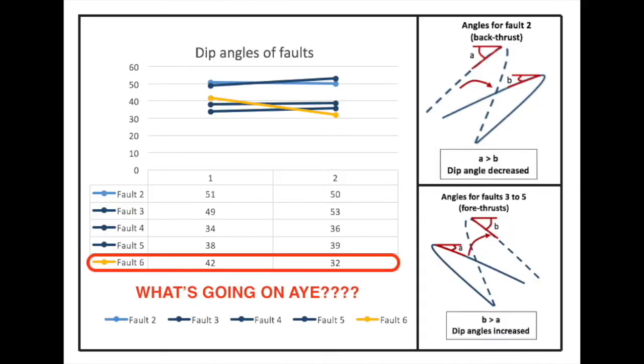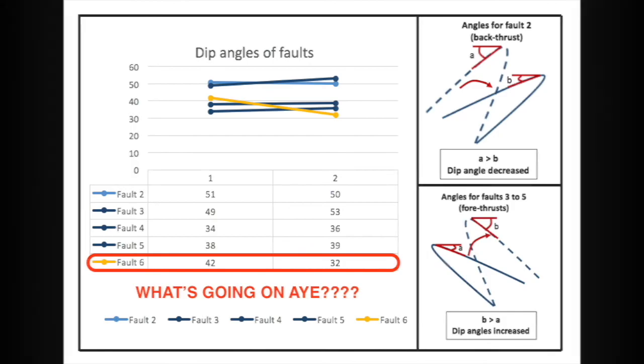Fault 6 does not follow the same trend. Instead, its angle becomes smaller unlike the previous forethrusts. What's going on?